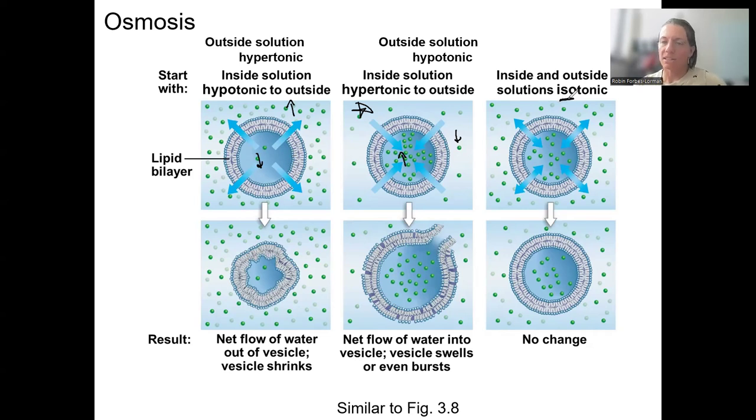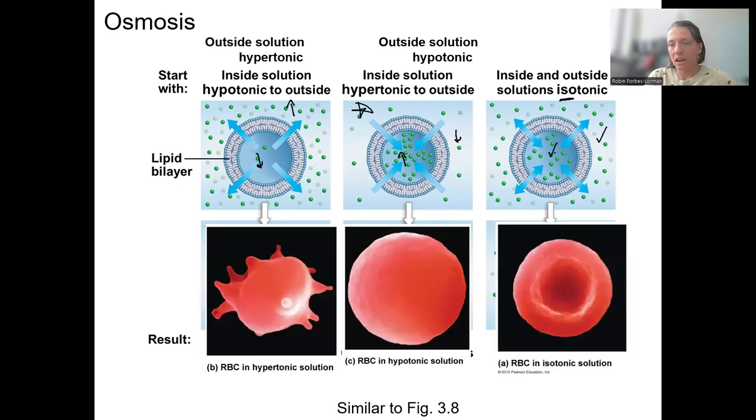Iso means the same. So the osmolarity inside and outside are in equilibrium, and we have no net movement of water, and our cell is happy. Anyway, this is an image of what that looks like in terms of red blood cells, and this actually happens to red blood cells. Hopefully not in your body, but there are cases in which it does.